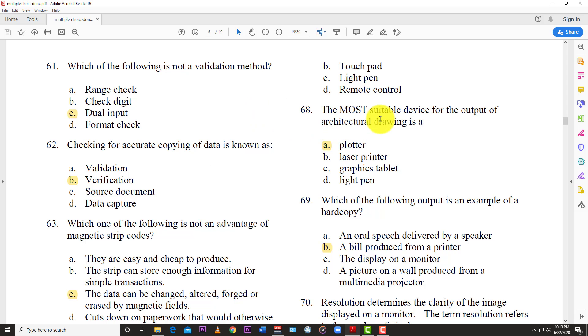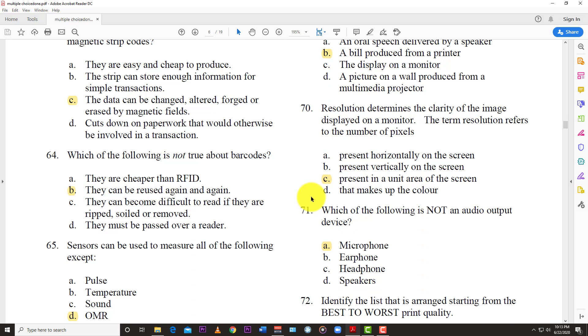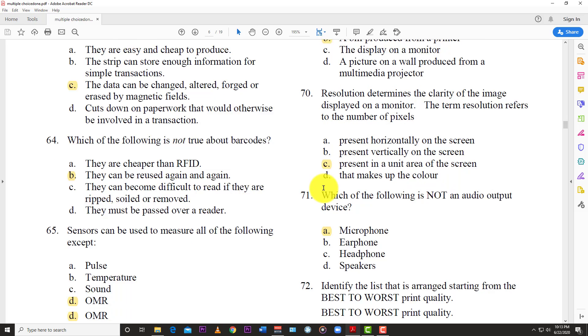Question 68: The most suitable device for the output of architectural drawing is, the answer here is A, a plotter. Question 69: Which of the following output is an example of a hard copy? And the answer is B, a bill produced from a printer. Question 70: Resolutions determine the clarity of the image displayed on a monitor. The term resolution refers to the number of pixels present in a unit area of the screen. So when you have your 4K resolution, you have your 1080p resolution, that's what they're talking about.